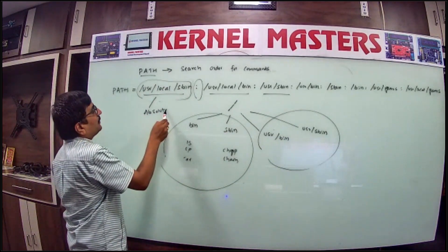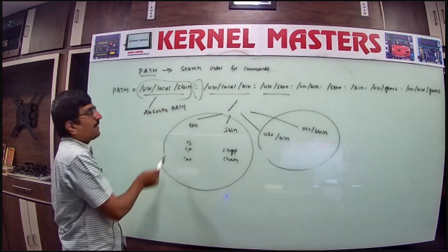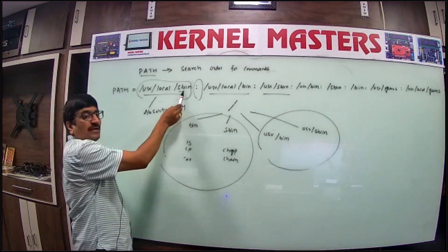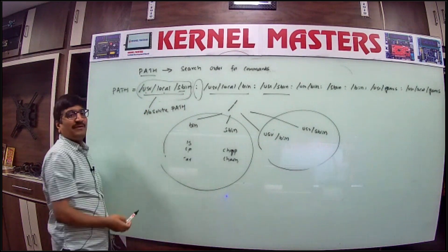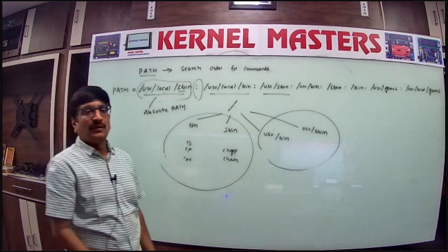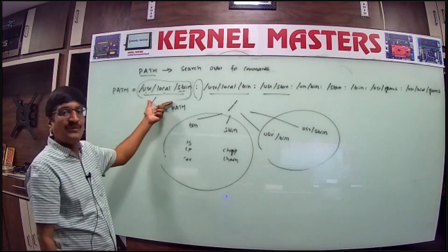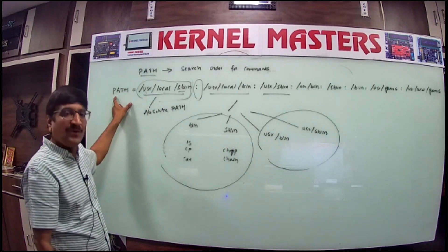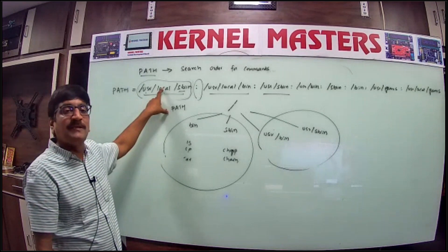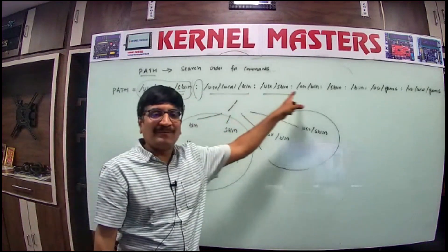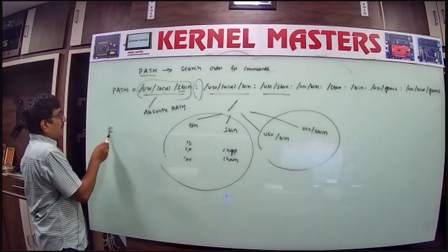An absolute path specifies the exact location starting from root. For example, /usr/local/bin — the path begins from the root. In the PATH environment variable, you maintain absolute paths to any number of locations, each separated by the colon operator. This is how the shell knows where to search.